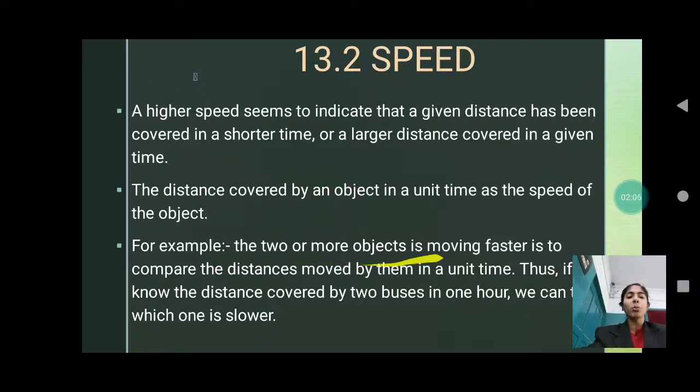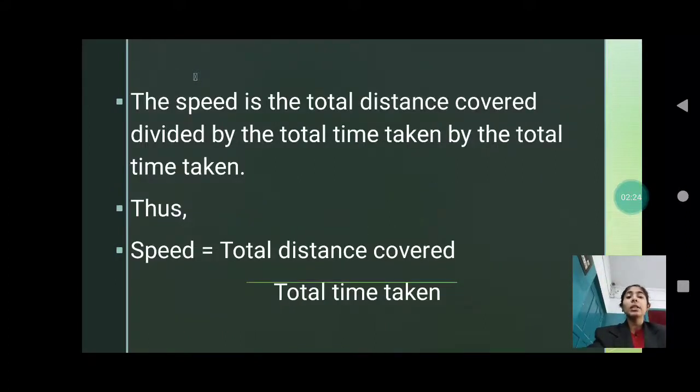For example, to know which of two or more objects is moving faster is to compare the distances moved by them in a unit time. Thus, if we know the distance covered by two buses in one hour, we can know which one is faster and which one is slower. The speed is the total distance covered divided by the total time taken. Thus, speed equals total distance covered by total time taken.